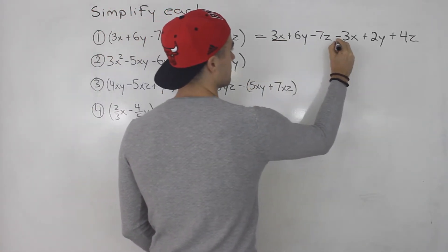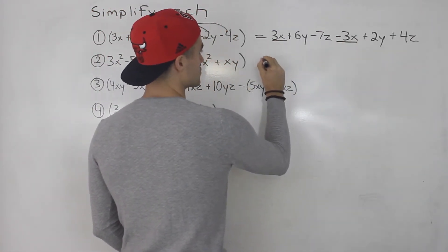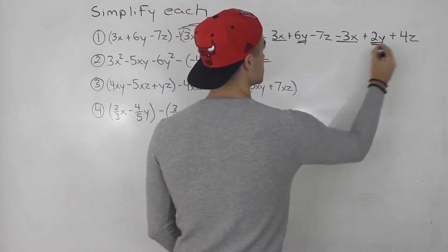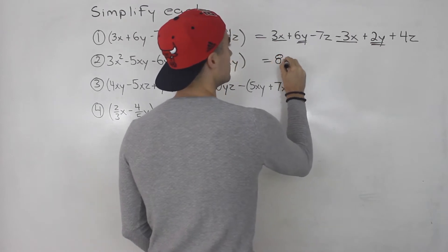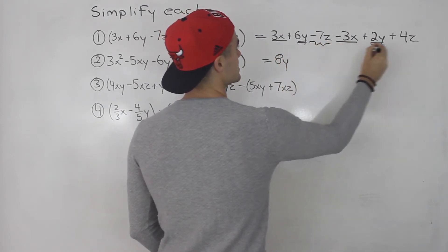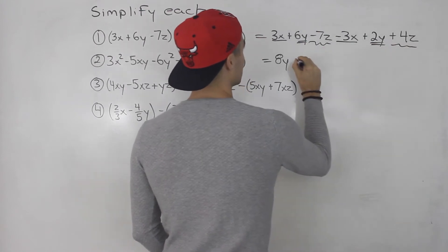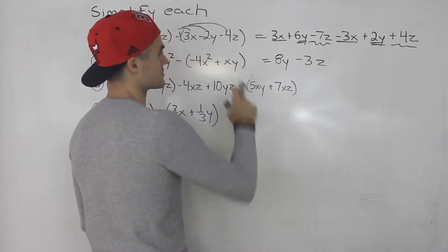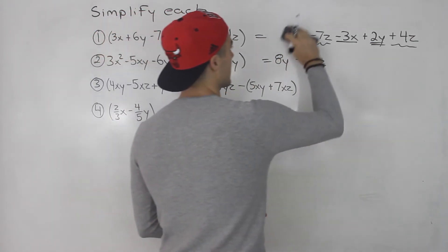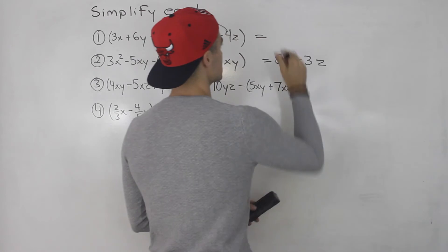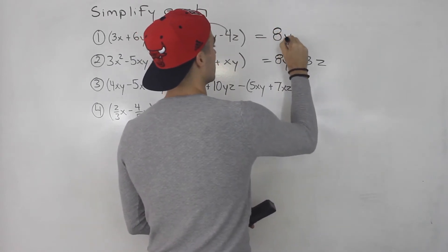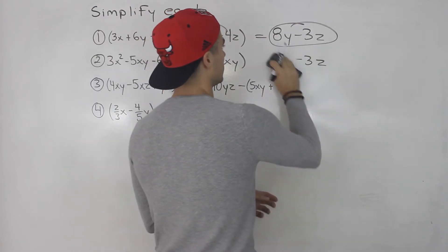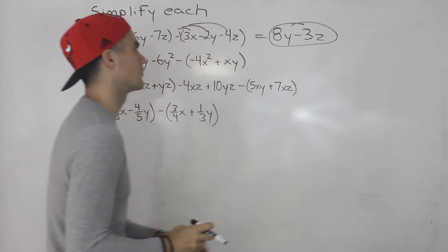Notice that 3x minus 3x — those are like terms — those will just cancel out. Then we got 6y plus 2y, that gives us 8y, and then negative 7z plus 4z gives us negative 3z. So 8y minus 3z is the simplified polynomial expression for number 1.